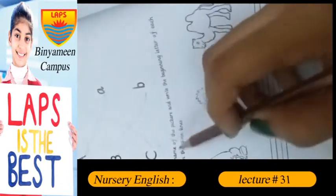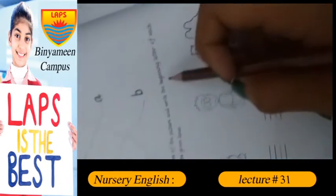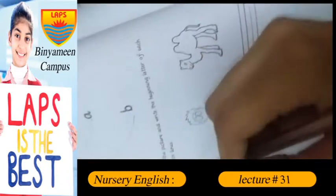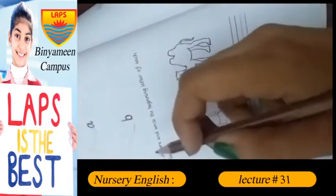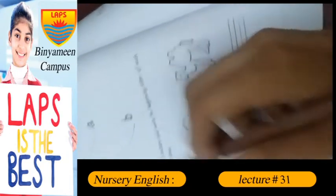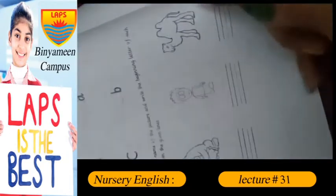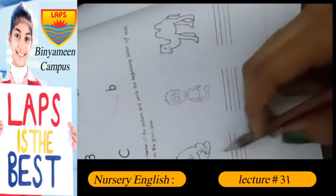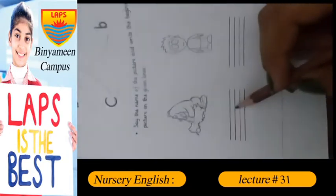Say the name of the pictures and write the beginning letters of each picture on the given lines. Here we have pictures, and we will write the beginning letters.